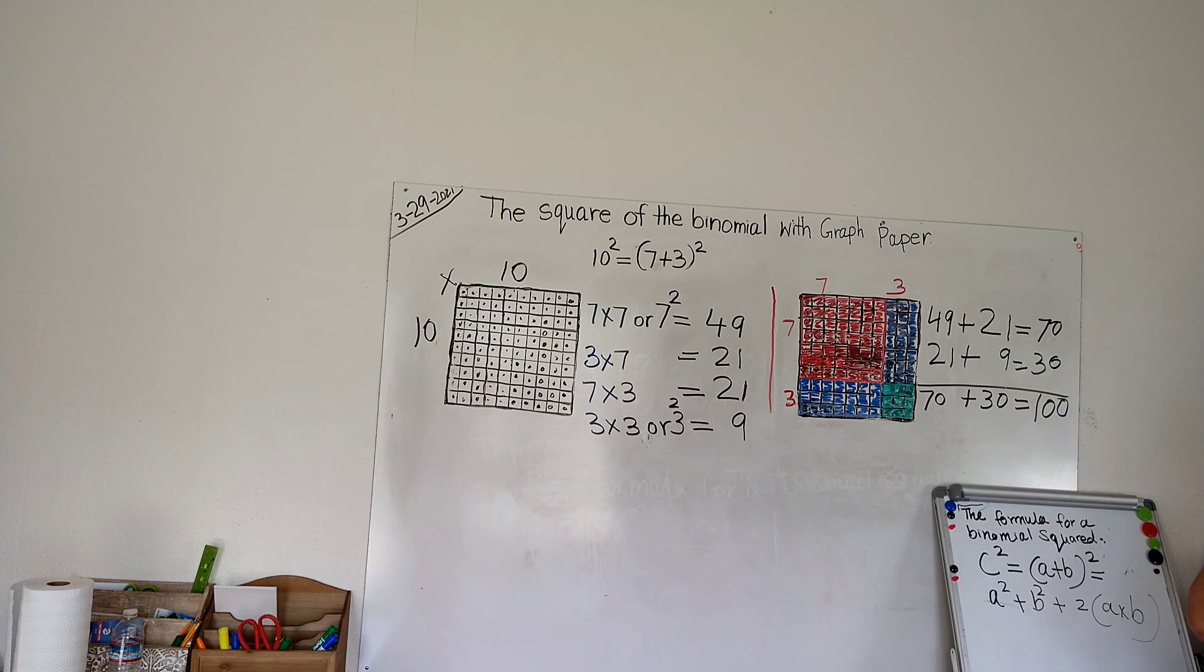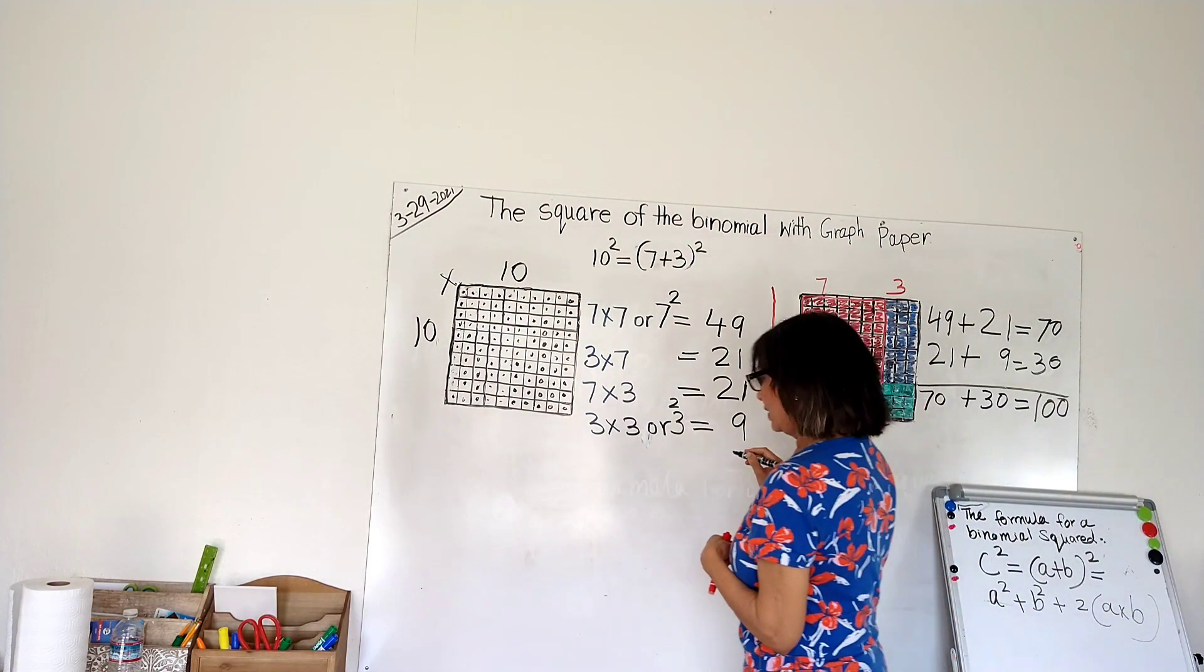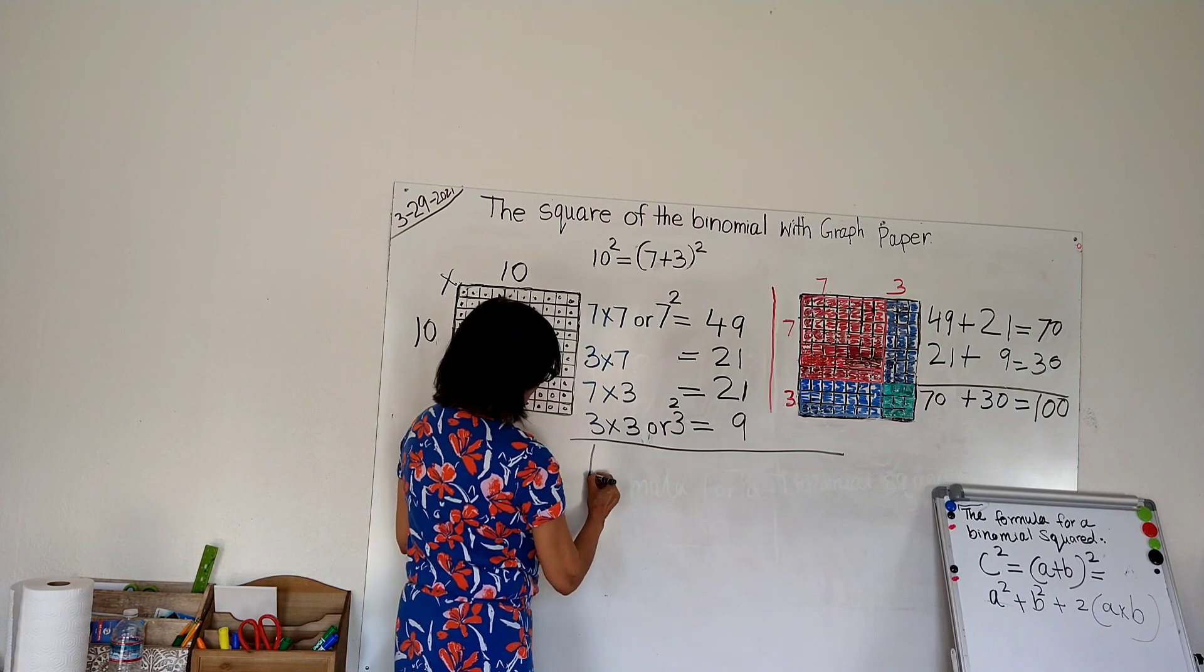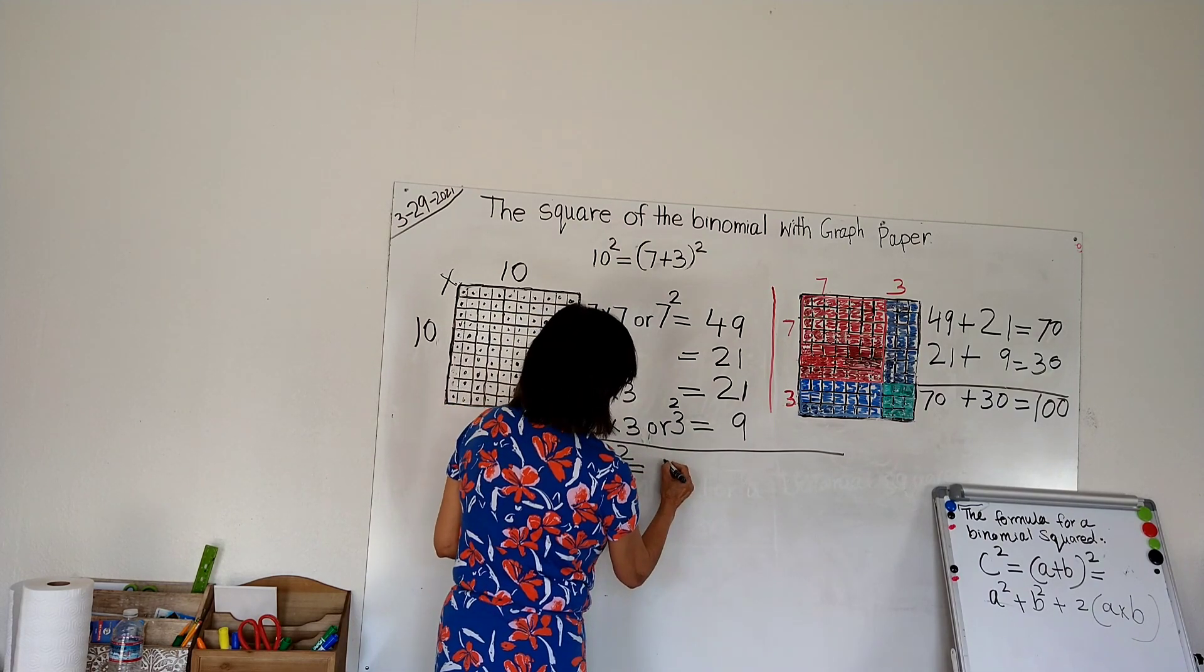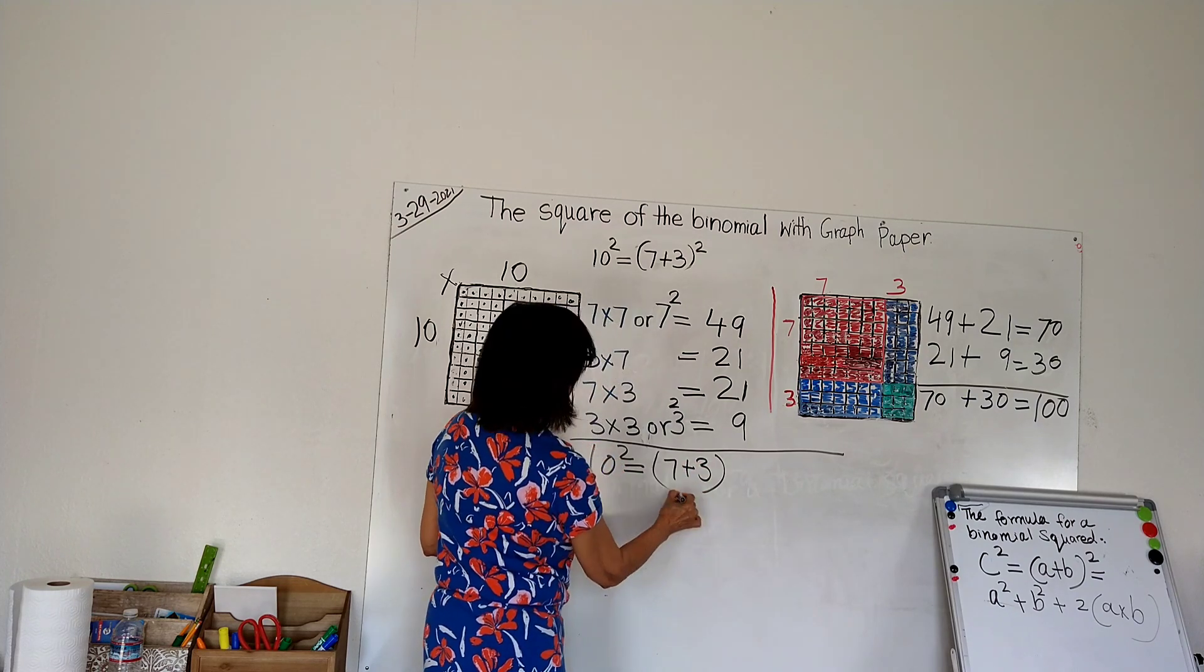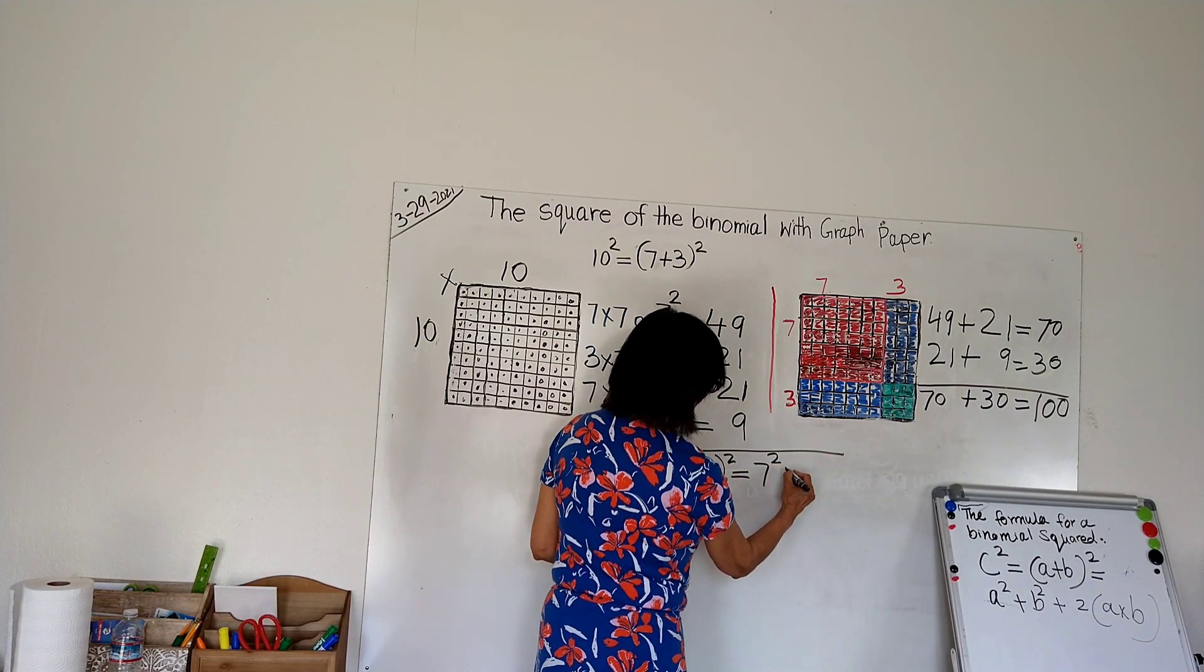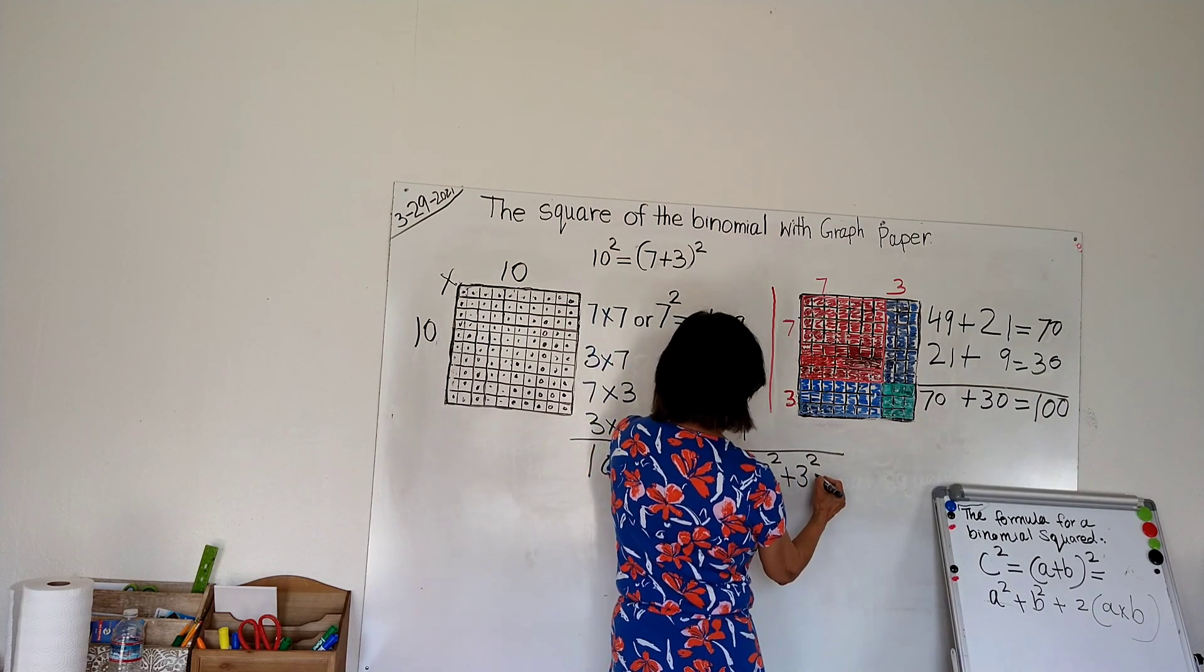There is another way of writing 100. Let me show you here. 10 squared equals 7 plus 3 squared. As I said, there is another way of writing: it equals 7 squared plus 3 squared, and we have 2 rectangles.